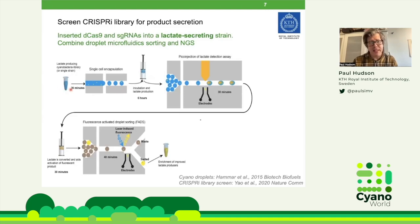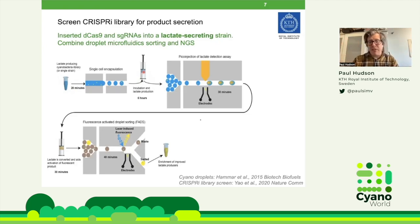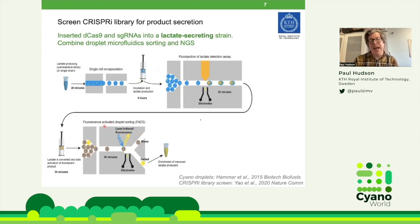We have a new paper on bioRxiv about this. In this example, we use a lactate-secreting strain — a Synechocystis strain synthesizing lactate. The system is a droplet microfluidic sorting system. We have the pool of cyanobacteria, encapsulate single cells into droplets on a microfluidic chip, let the cells incubate — each cell is secreting lactate into its droplet — then inject the droplets with a fluorescence-based detection assay and sort them using fluorescence-activated droplet sorting. We can then sequence the sorted mutants identified as high producers.